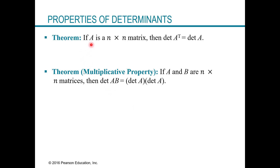A couple more theorems. If A is an n by n matrix, then the determinant of A transpose — where you swap the rows and columns — equals the determinant of A. So transposing a matrix doesn't change its determinant. And if A and B are n by n matrices, then the determinant of A times B equals the determinant of A times the determinant of B — you can take the individual determinants and multiply them, and it gives the same result as multiplying the matrices first and then finding the determinant.